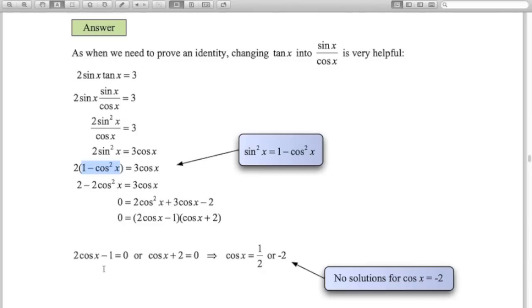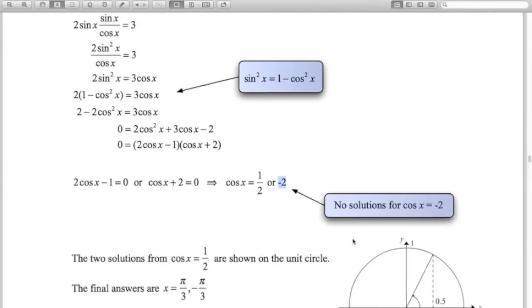So in other words, we want cos of x equaling 1 half, or cos of x equaling minus 2. Hopefully you can see that you're not going to get any solutions from this part. If you think of a unit circle, values on the x-axis for cos, the lowest value we can get is minus 1, the highest value is 1. There's no angles that are going to give us a cos value of minus 2.